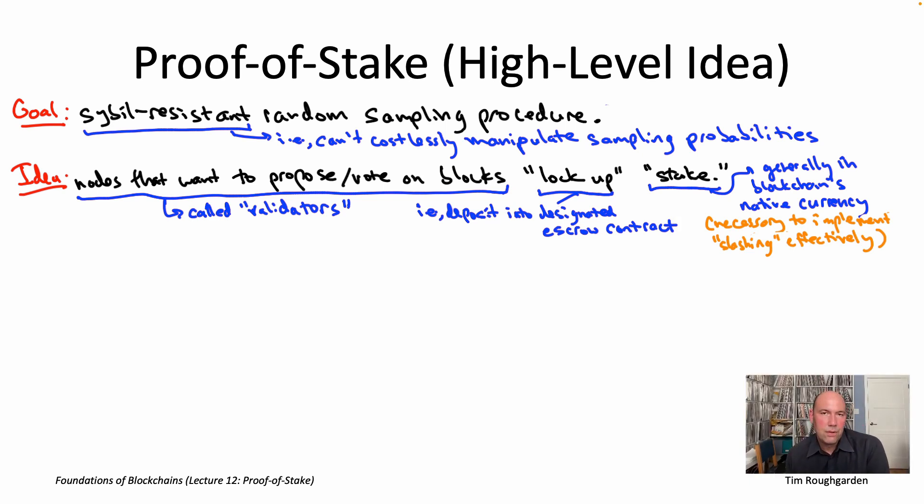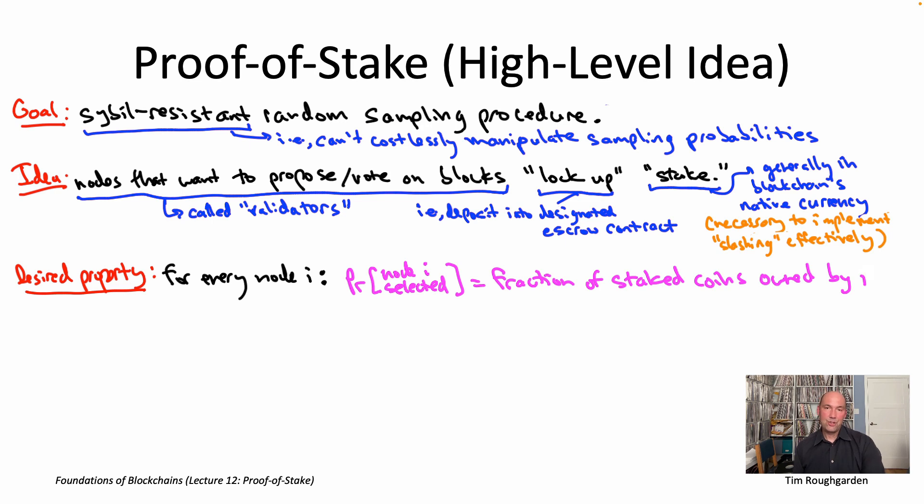So that's the basic idea of proof of stake. And the basic property that we want of a random sampling procedure is that a node should be selected with probability proportional to the amount of stake it has locked up. So the amount, for example, of native cryptocurrency it has in escrow in this designated smart contract. Okay, so a random sampling procedure is such that for each node running the protocol, a node is selected with probability equal to the fraction of the state coins that it owns. And if you go back to lecture number nine, you will see this is literally exactly the defining property of proof of work except with hash rates replaced by staked coins. So this is the key defining property of proof of stake random sampling. Let's give this abbreviation. Let's call this property star.